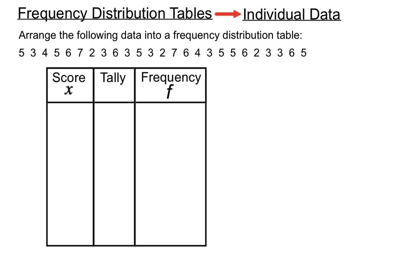Now a frequency distribution table can have a score column and a tally column to help us count, and a frequency column. The frequency column tells us how many times each score occurs. Let's have a look at how we might do this if we're asked to do this in a test.